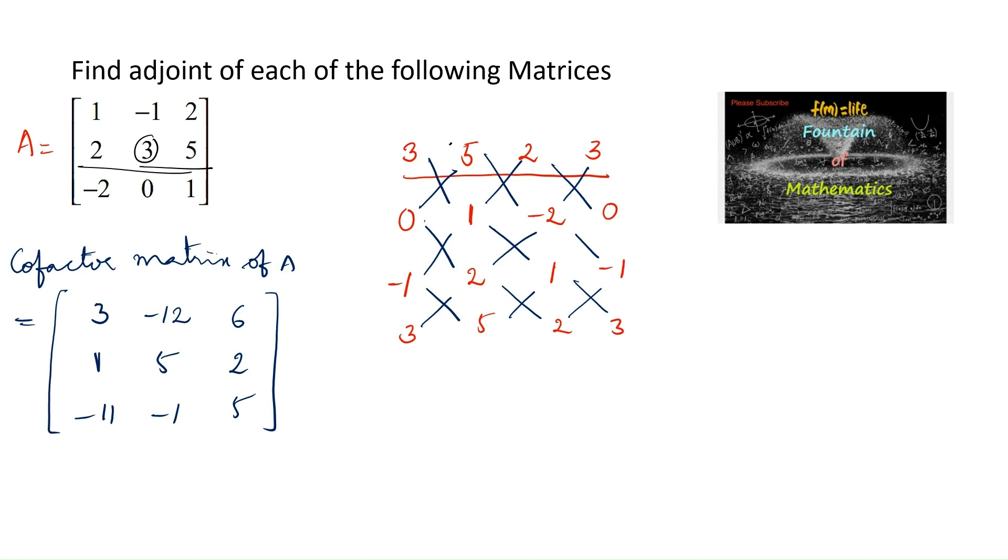And we know that the adjoint of matrix A is equal to the cofactor matrix transpose. That is [3, -12, 6; 1, 5, 2; -11, -1, 5] transpose. We will get [3, 1, -11; -12, 5, -1; 6, 2, 5].